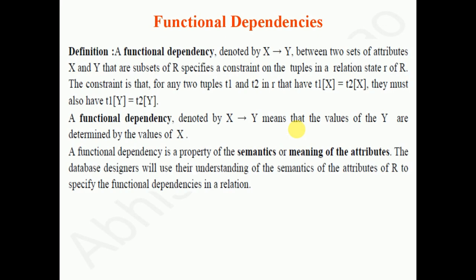Now let's see what functional dependencies are in a given relation. A functional dependency is denoted by X → Y, where X is a prime attribute and Y is a non-prime attribute (a subset of X). It is a property of the semantics — the database designers use their understanding of the semantics of attributes to specify functional dependencies.